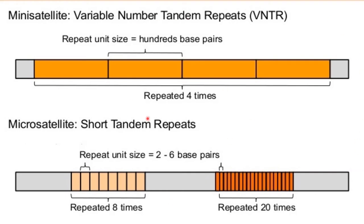In this diagram we can clearly understand the difference between minisatellite and microsatellite. The minisatellite, also called variable number tandem repeat (VNTR), consists of a repeat unit size of 100 base pairs repeated 4 times. In case of microsatellite, also called short tandem repeat or simple sequence repeat, the repeat unit size is 2 to 6 base pairs — compared to 10 to 100 base pairs for minisatellite.